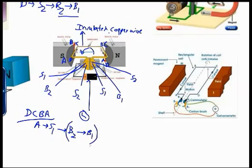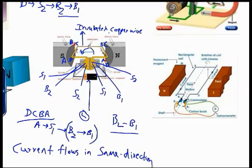So again we can see that the current flows in the same direction, B2 to B1, during both rotations of the coil. Since the current flows in the same direction during the complete rotation, this kind of current is called direct current, and the entire dynamo is called a DC dynamo.